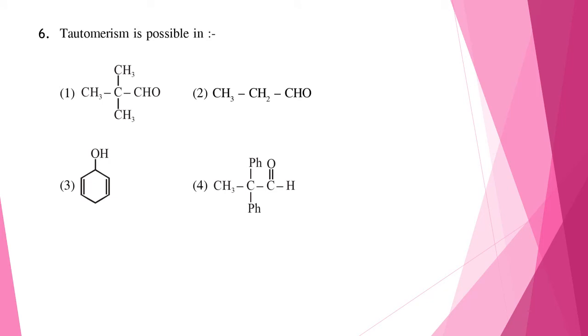Question six: tautomerism is possible in which of the following? Tautomerism is possible in option two, as shown in the answer, and therefore the correct answer is option two.